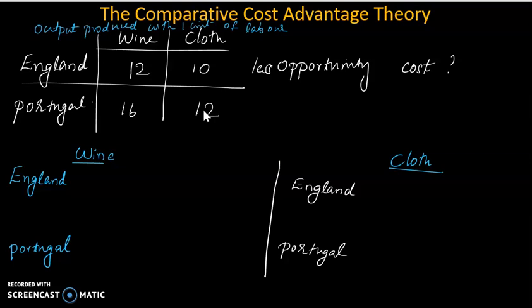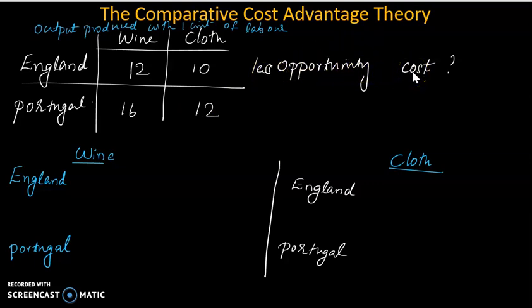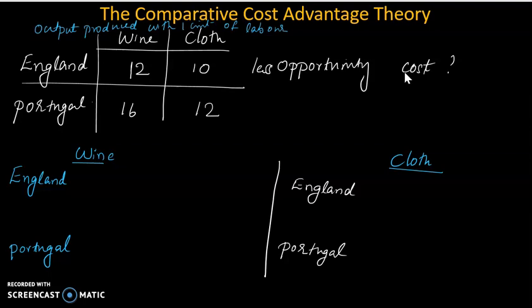This is what David Ricardo said. This is how we find out the comparative cost advantage — less opportunity cost means we choose that commodity for that country.